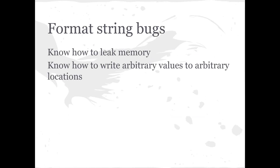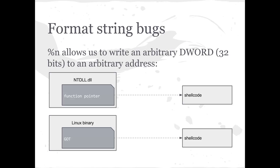You have to know with format strings how you leak memory, how you reveal the contents of memory on the stack, how you reveal the contents of memory at a specific memory address, how you would write arbitrary values to specific locations with the format string vulnerability, and how this would be used to overwrite things like function pointers so that when they get called they can point to your shellcode instead. The global offset table is one really good example in Linux of how to achieve that.